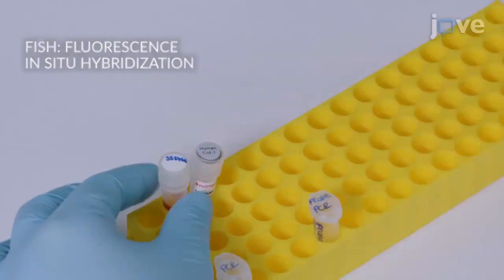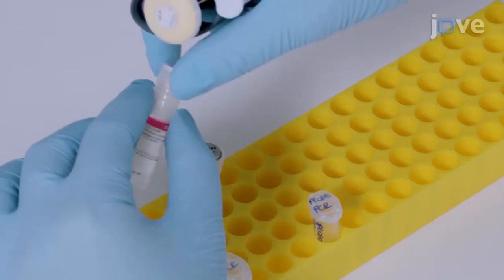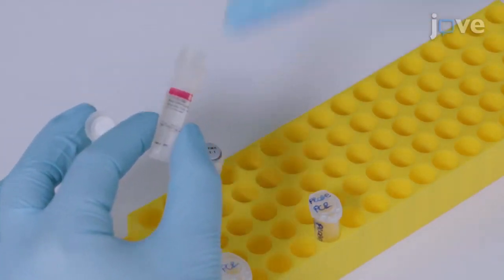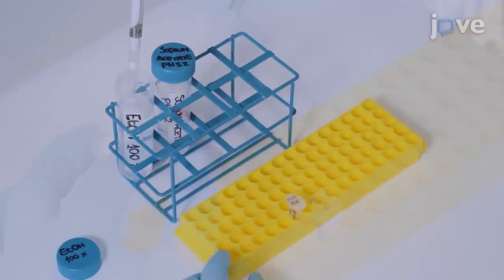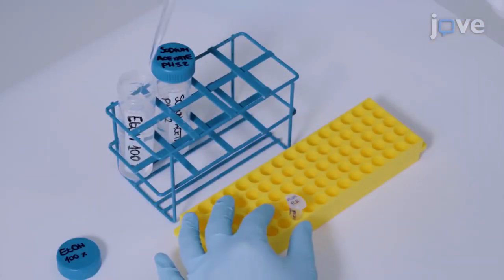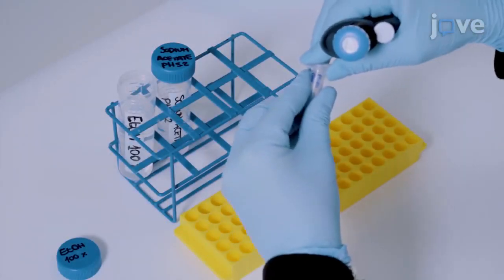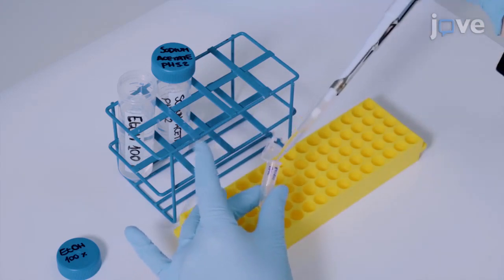3.5 micrograms of species-specific COT1 DNA, 3 volumes of 100% ethanol, and a 1 tenth volume of 3 molar sodium acetate for 1 hour at minus 80 degrees Celsius.